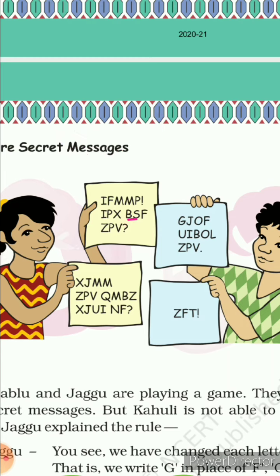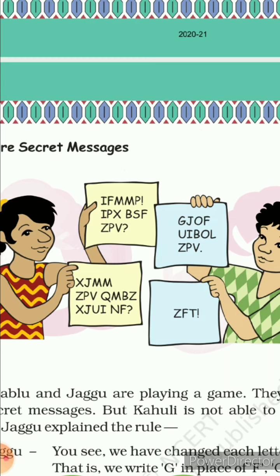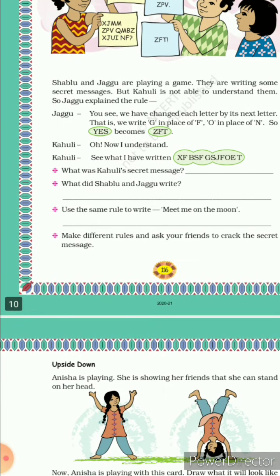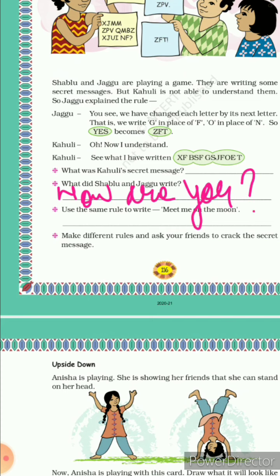Next is B S F — BSF ka meaning hain R A R E. Wait — BSF ka meaning hai A R E. Next is Z P V — Z se pehle Y, P se pehle O, and V se pehle U. So aapka next word hai Y O U. So aapka poora message ho gaya hai: How are you. First message hai How are you.